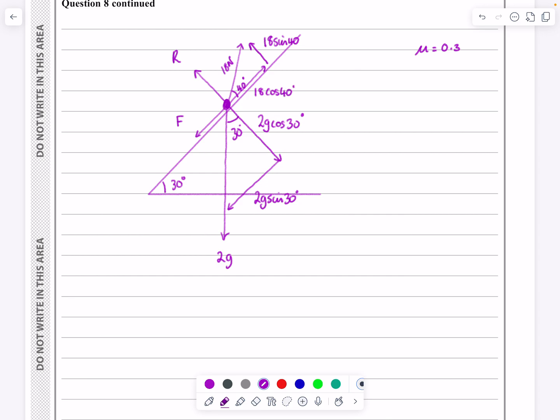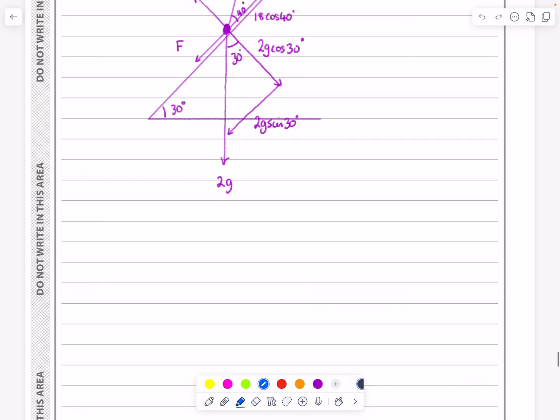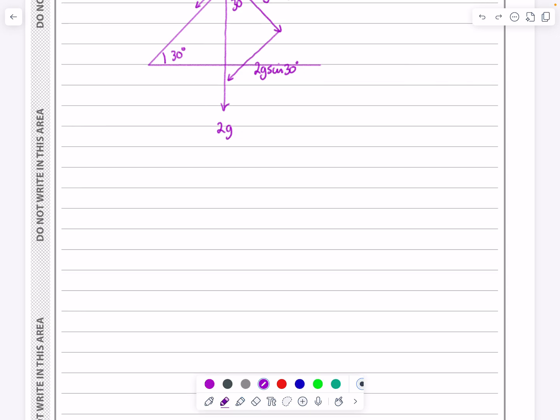And then the key one is this 18 newtons here that we're going to need to have parallel and perpendicular to the plane. And again, that's relatively straightforward on my diagram, 18 sin 40 and 18 cos 40 in there. Once I've resolved all those forces, what am I going to do? Well, let's just quickly tell you and then we'll tell the examiner. What we want to do is f equals ma in this direction. If I want to do f equals ma in this direction, then I really need to know what that f is. That f will be mu r. So I have to start off by doing r.